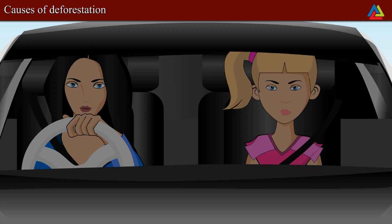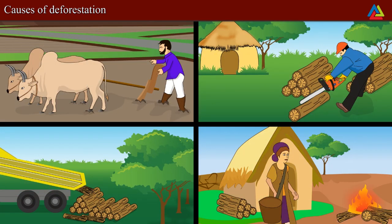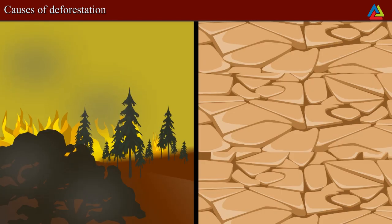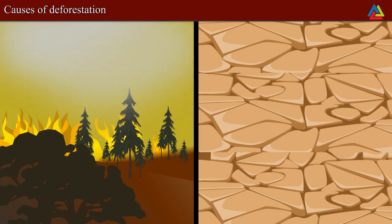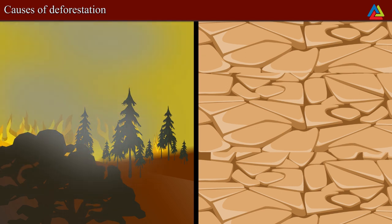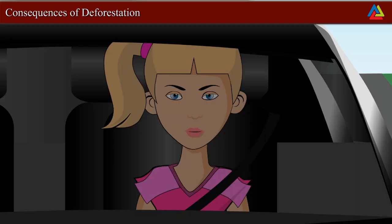Back when we crossed this road we had seen lush green forests, but the trees are cut now. Trees in the forest are cut for many purposes like procuring land for cultivation, building houses and factories, making furniture, or using wood as fuel. Some natural causes of deforestation are forest fires and severe droughts.